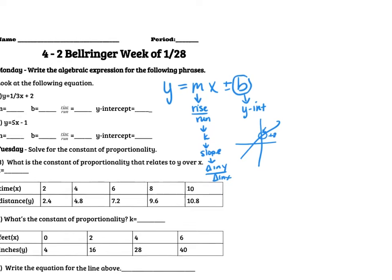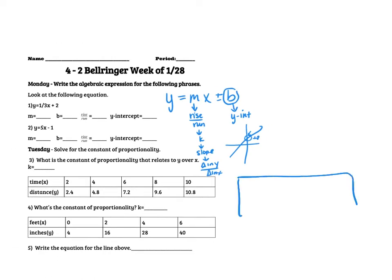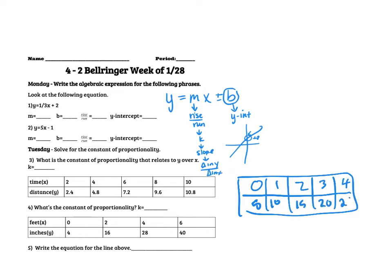So if I have a chart, and it says 0, 1, 2, 3, 4 over 5, 10, 15, 20, 25...